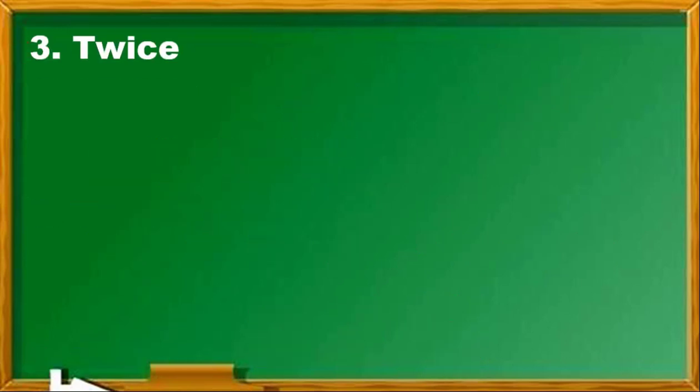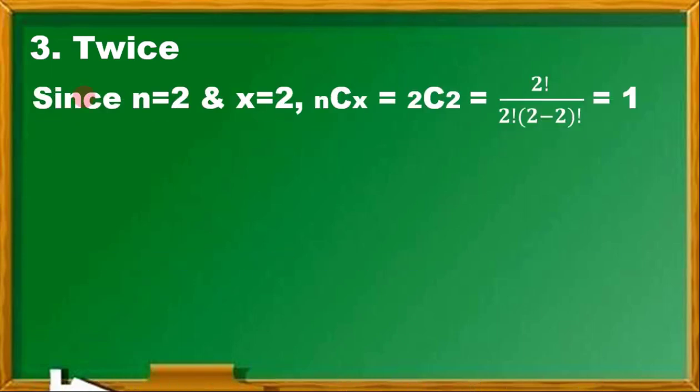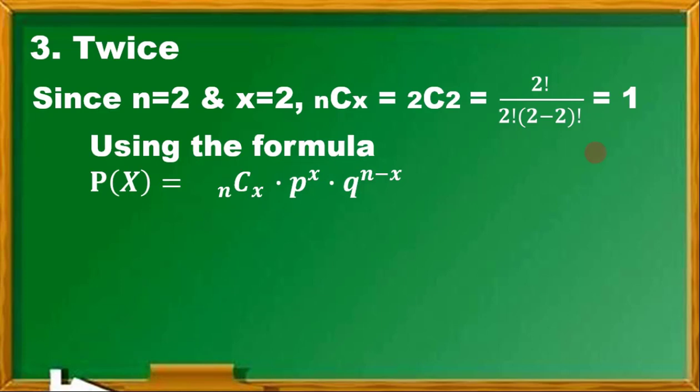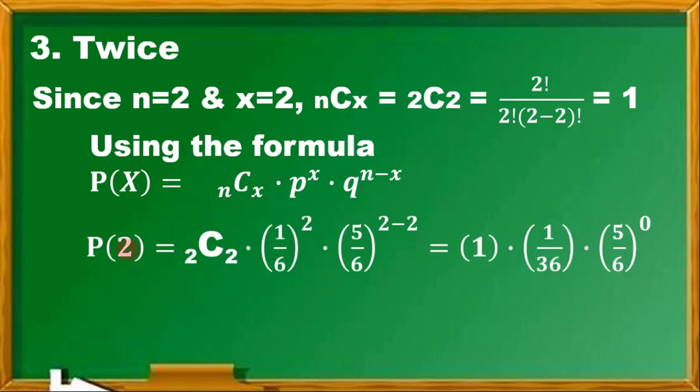Next, P(X) equals 2. N is 2, X is 2. So 2C2 equals 1—verify in your calculator. Using the same formula, P(2) is 1 times 1/6 raised to 2, times 5/6 raised to 2 minus 2, that's 0. So we have 1 over 36.